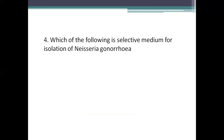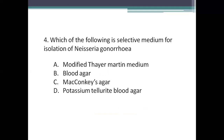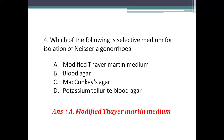Next question: which of the following is the selective medium for isolation of Neisseria gonorrhoeae? Option A: modified Thayer-Martin medium. Option B: blood agar. Option C: MacConkey's agar. Option D: potassium tellurite blood agar. The right answer is Option A, modified Thayer-Martin medium. It allows the growth of only Neisseria species and consists of chocolate agar with antibiotics: vancomycin, colistin, and nystatin. In the modified Thayer-Martin medium, trimethoprim is also added.